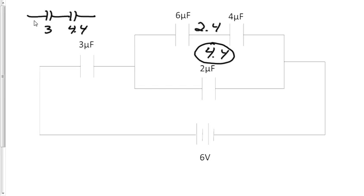Now we can add these two together because they're in series. We're going to reciprocally add those, 1 over 3 plus 1 over 4.4, and then invert that. The C total for the whole circuit is 1.8 microfarads.